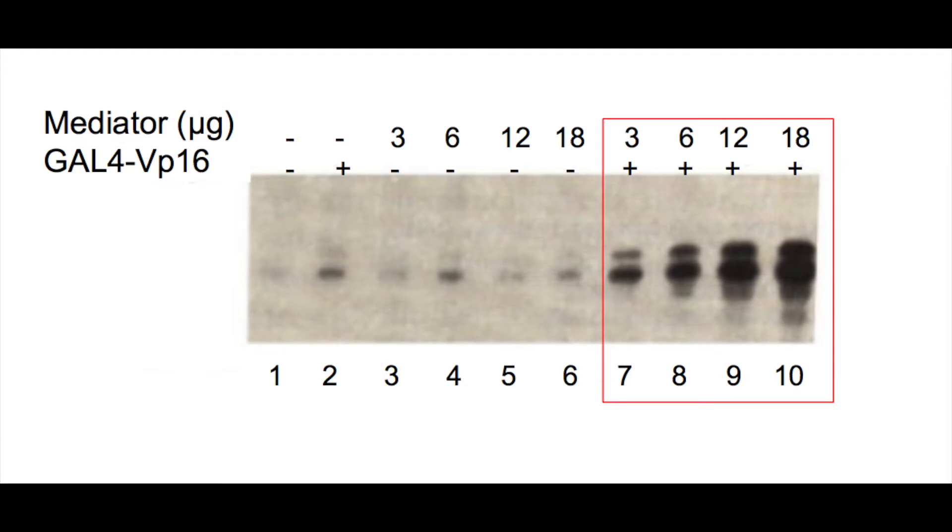As we look at lanes 7 through 10, more RNA transcripts are being made. In those lanes, mediator and the activator were both present in the reaction. Looking at lanes 7 to 10, we can see that the concentration of mediator used in the reaction is increasing. Since the bands got darker from lanes 7 through 10, this indicates that more RNA transcripts were made as more mediator was added in the presence of the activator.